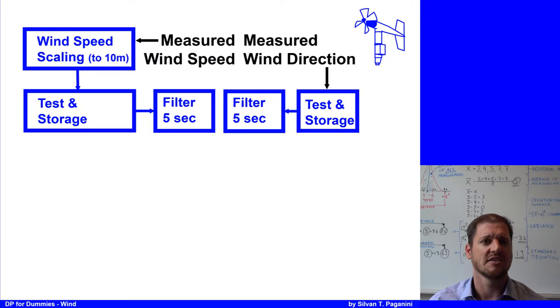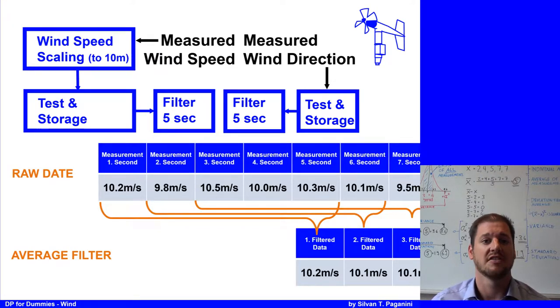But what kind of filter is being used? For most DPOs, they say it's an average filter which takes the average of the last 5 seconds. In our example, after 5 seconds we have an average of 10.2 meters per second. In the 6th second we have 10.1 meters per second. In the 7th second 10.1 meters per second, and so on. That would be good enough.